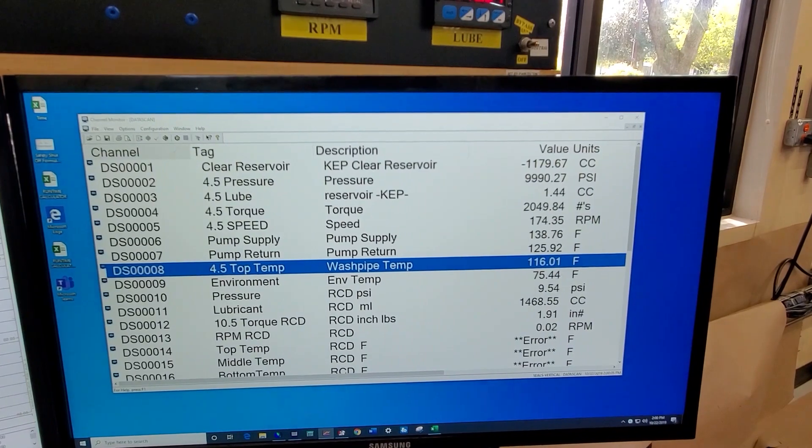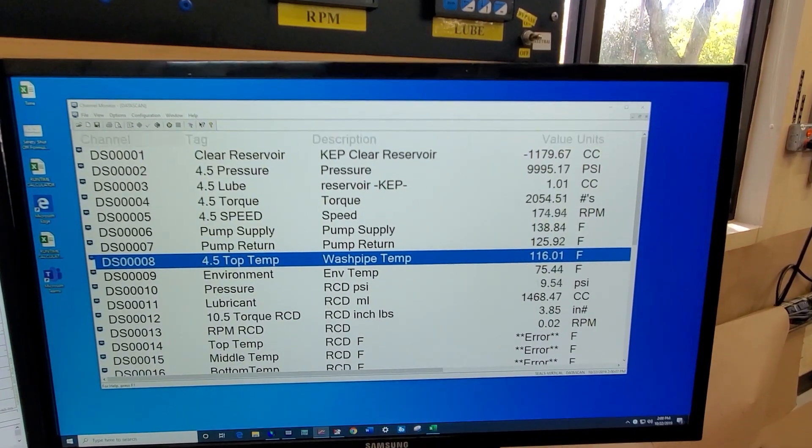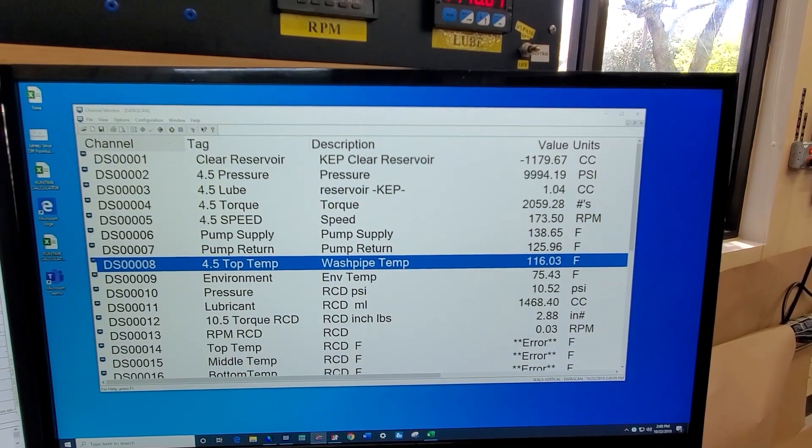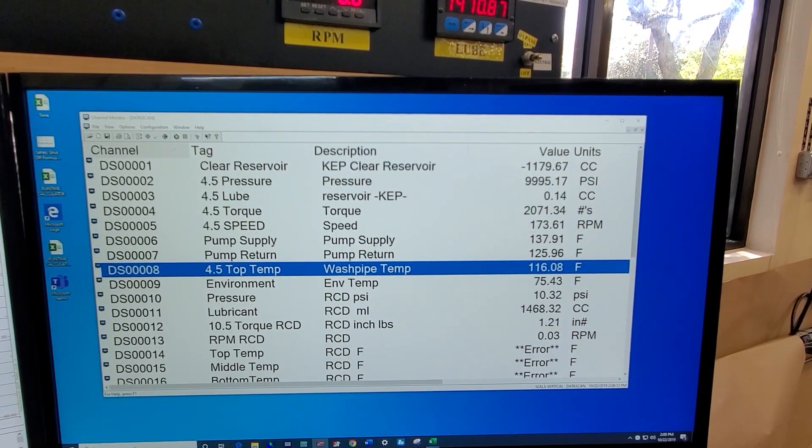The test was instrumented to monitor and record various test parameters. These parameters included pressure of the lubricant and the pressurized test fluid, the rotary speed of the washpipe, running torque, lubricant consumption, and temperatures at various locations.